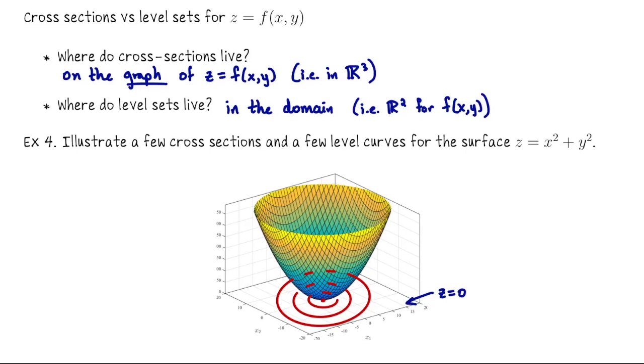On the other hand, if I want to look at a cross section, say I'm going to illustrate the y equals 0 cross section, I'm going to draw that right on the graph of the surface. So this curve here would be like slicing into this paraboloid with the plane y equals 0. I hope this helps you distinguish between level sets and cross sections. Thank you for your attention.